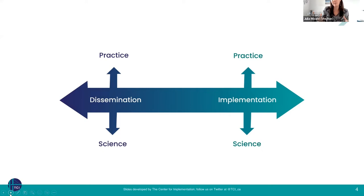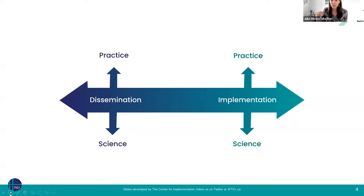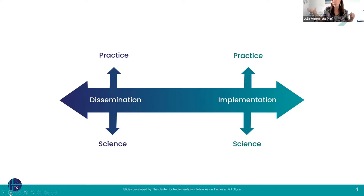At the other end of the spectrum we have implementation — the act of using strategies designed to change people's behavior. Policies, practices, and programs all land on that end. There are researchers like Brian who are implementation scientists, researching what contextual factors predict outcomes, what predicts sustainability, and how we can best adapt things. We should be drawing on that science to inform our implementation practice efforts. My job is helping bridge the gap between the science of implementation and people who want to actually implement things or support that implementation.